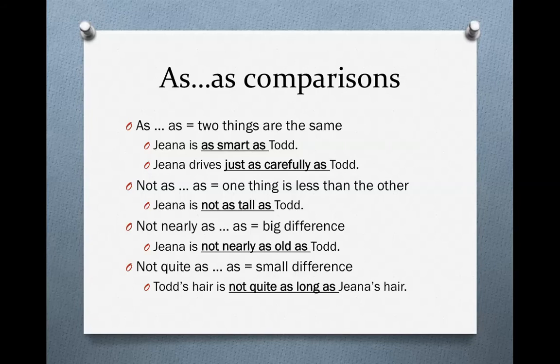You can also make these sentences negative. All you have to do to make it negative is use 'not' — not as...as. This means that one thing is less than the other. So we could say Gina is not as tall as Todd, and that means that Todd is taller than Gina.